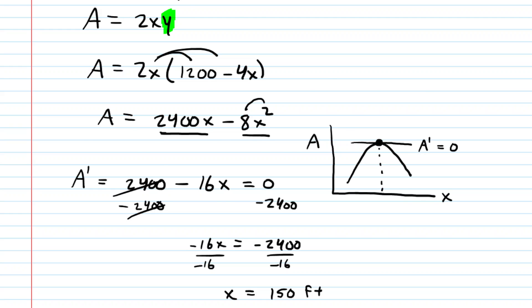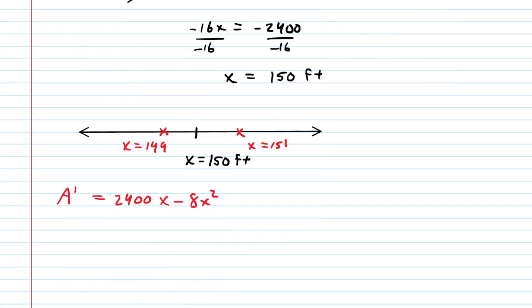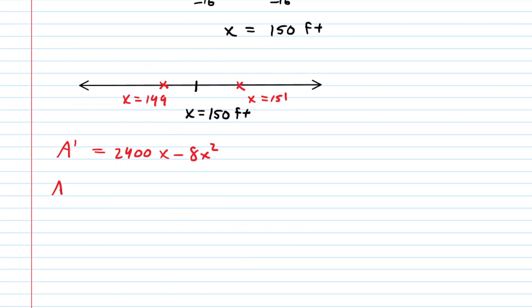Now, we don't yet know if this actually maximizes the area. We have to do a test to ensure that the area is indeed maximized. We will choose to do the first derivative test. We will plot the 150 on a number line, and then we will choose some test values. We'll choose a value less than 150, as well as greater than 150. So for example, we might choose x is equal to 149 feet, and then x is equal to 151 feet. And what you do is you plug that into the derivative. Let's go ahead and rewrite the derivative. And then what you're going to do is you're going to plug in your test values. So for example, you would do the derivative with 149 plugged in first.